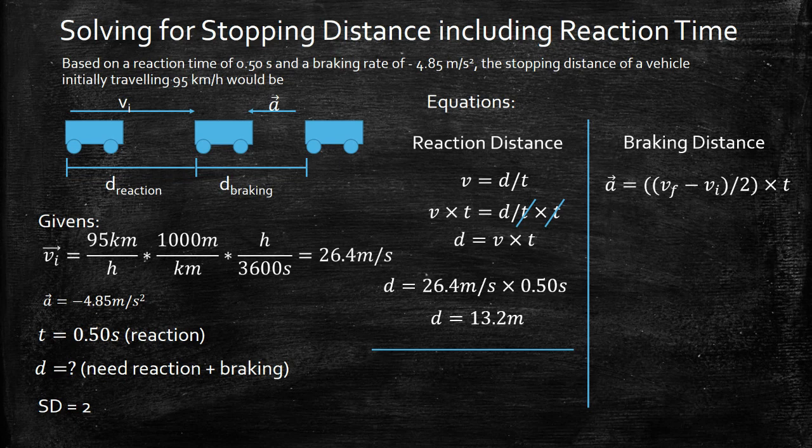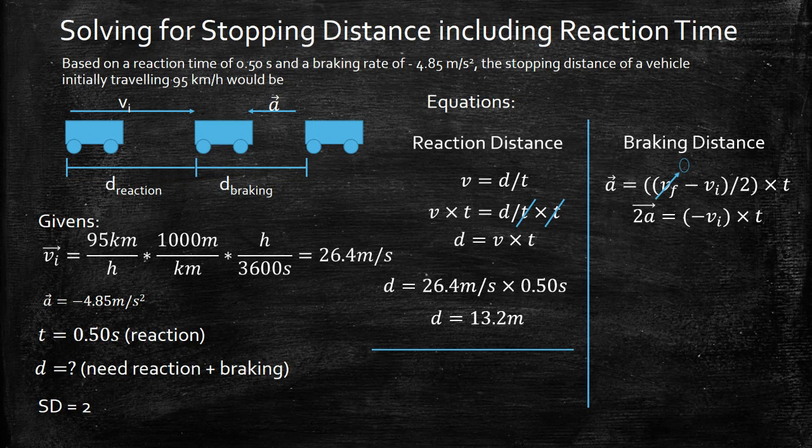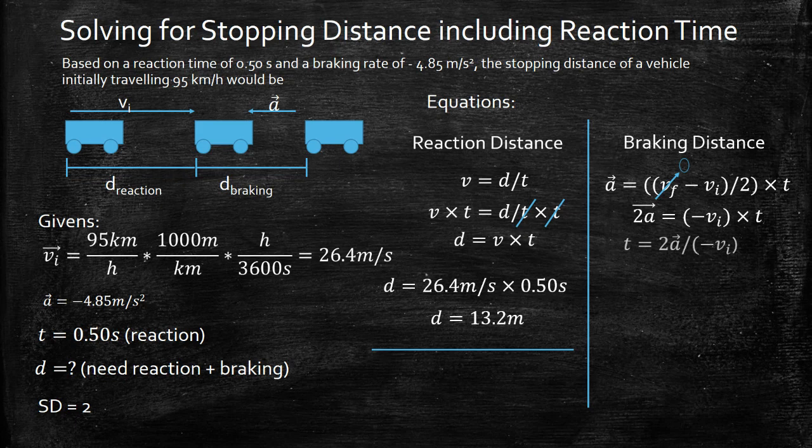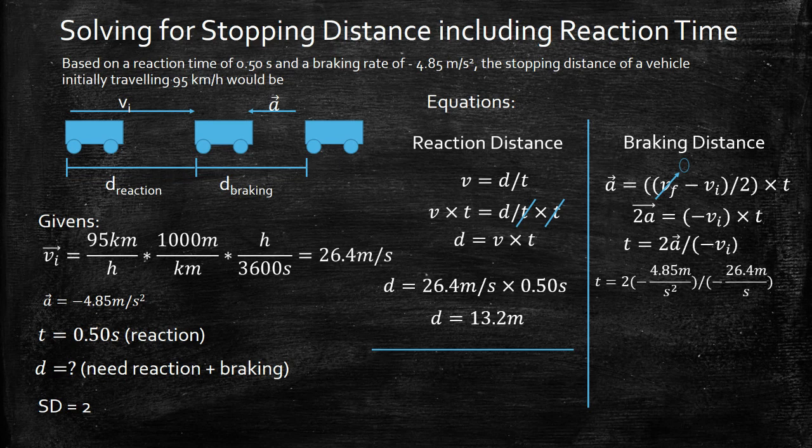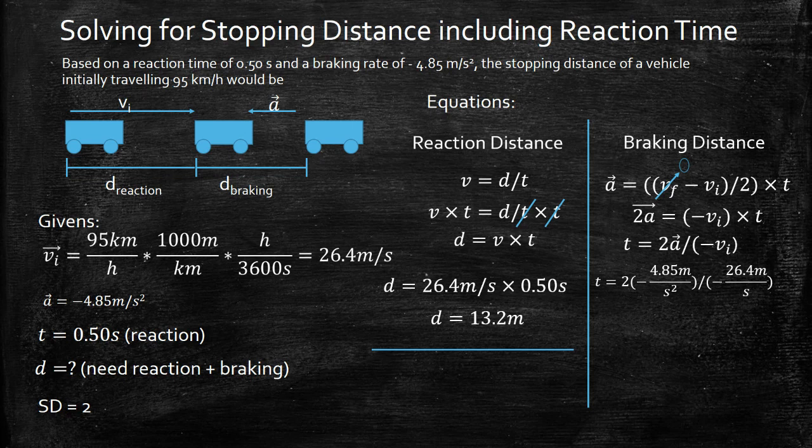Now the braking distance. First we're going to rearrange this equation to solve for time. The final velocity is zero and I'm just multiplying both sides by two to move that two over. Next I'm going to divide both sides by the initial velocity and that's what led me to time equals two times acceleration divided by initial velocity. Now we can plug in our numbers and solve, and we get 0.184 seconds. So that's our stopping time.